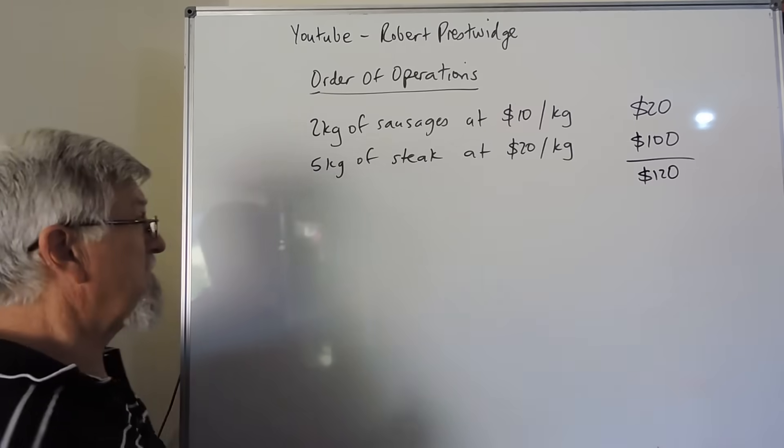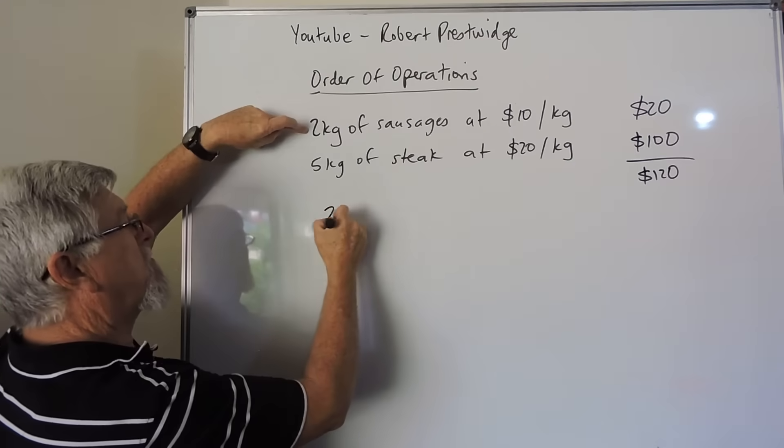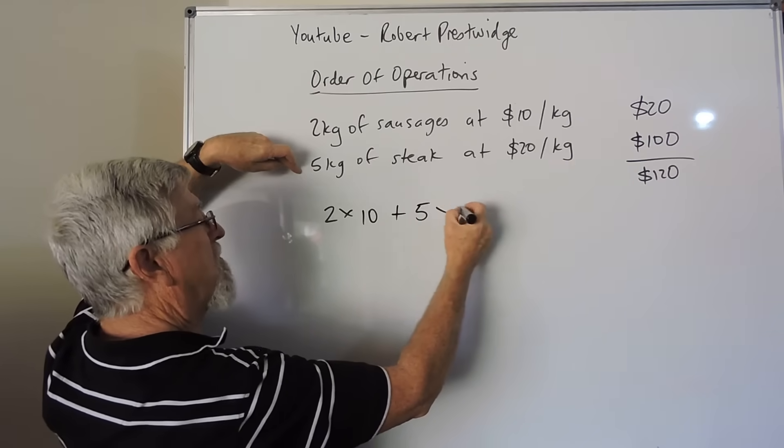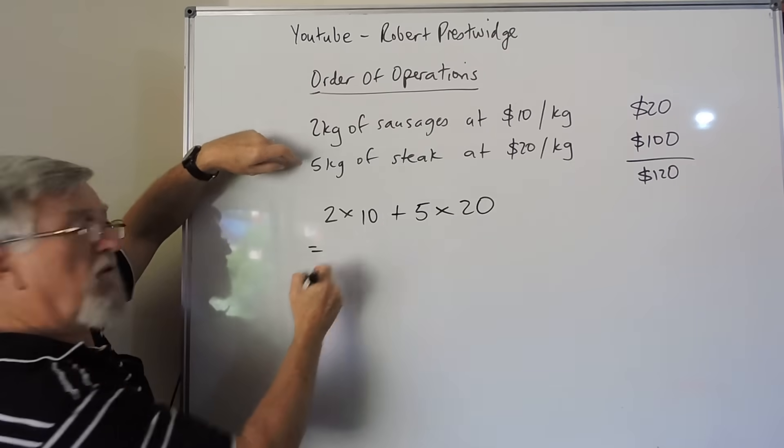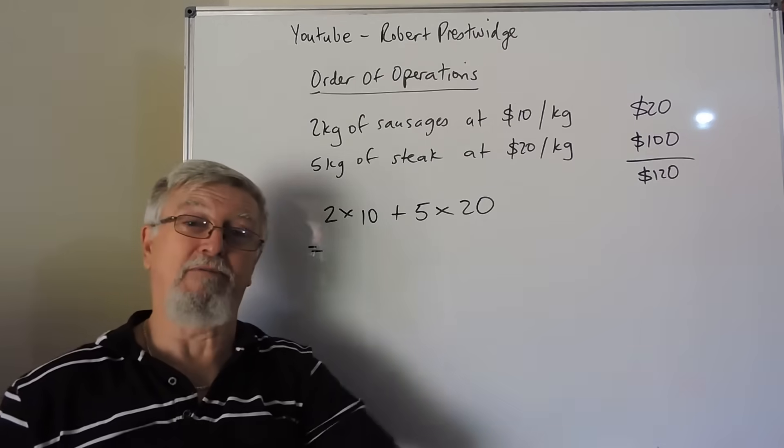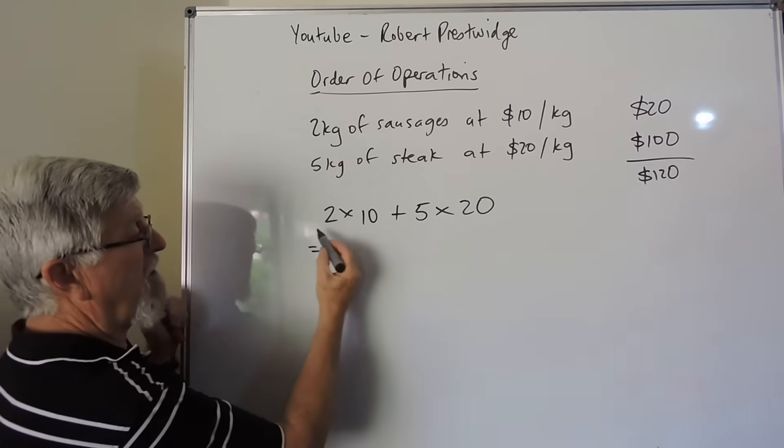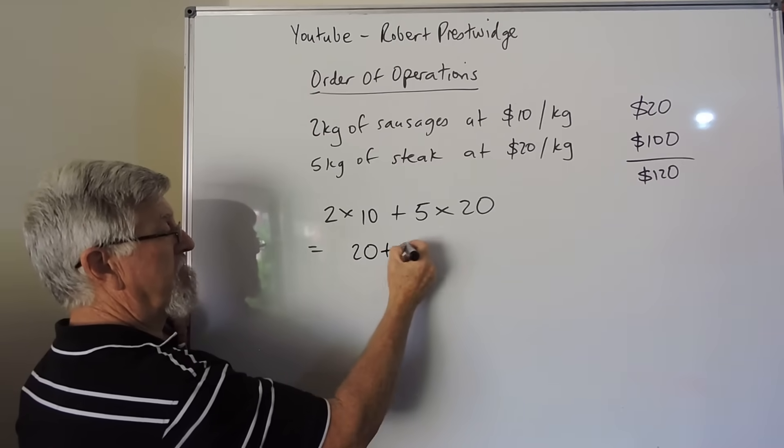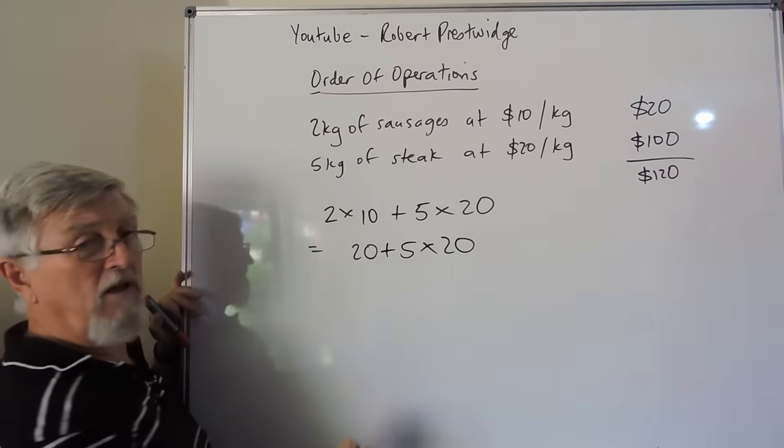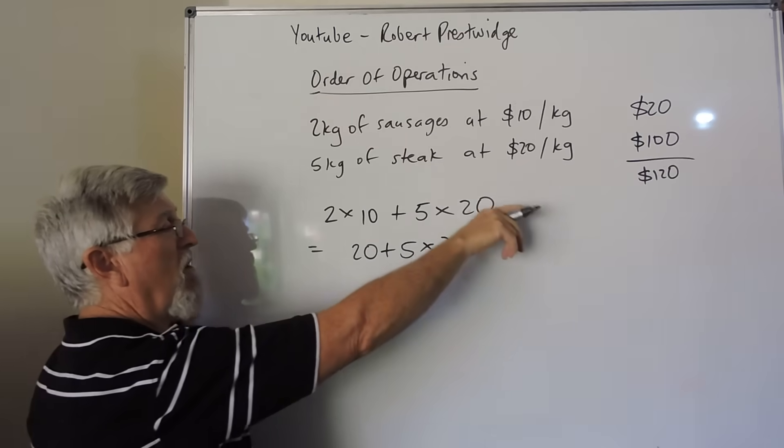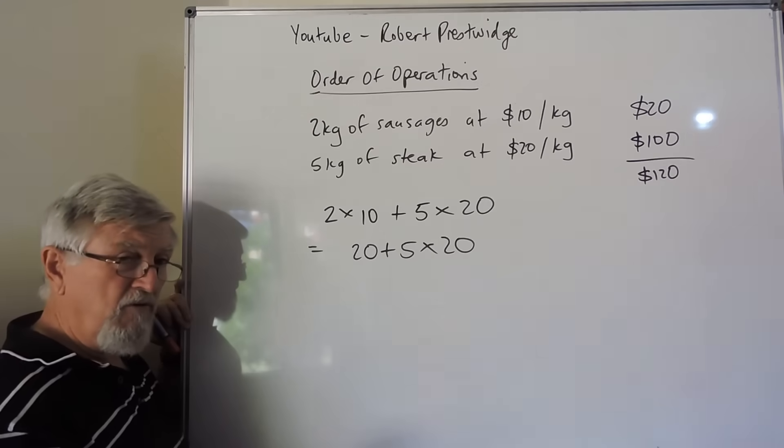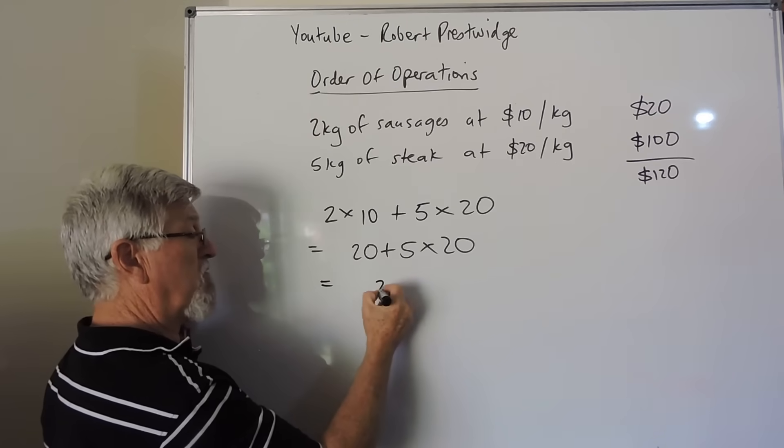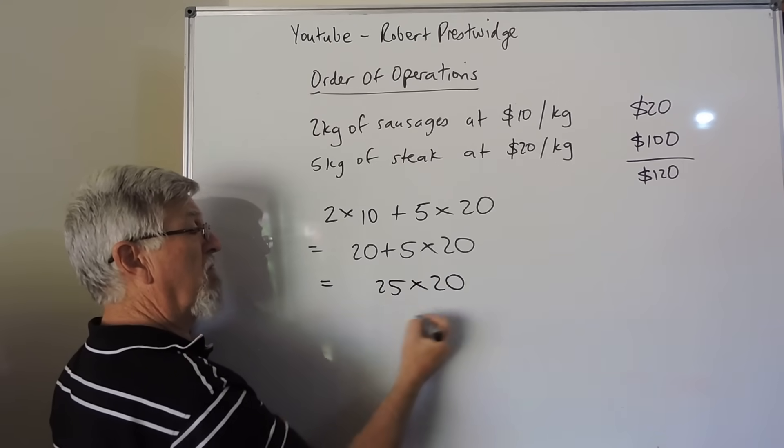If I turn that into a math situation where it's just 2 lots of 10 plus 5 lots of 20, here's where order of operations comes in. So if I went 2 times 10 is 20, and I thought that I could just go from left to right, and I thought I didn't have to do multiply first, then I can go 20 plus 5 is 25, multiply it by 20.